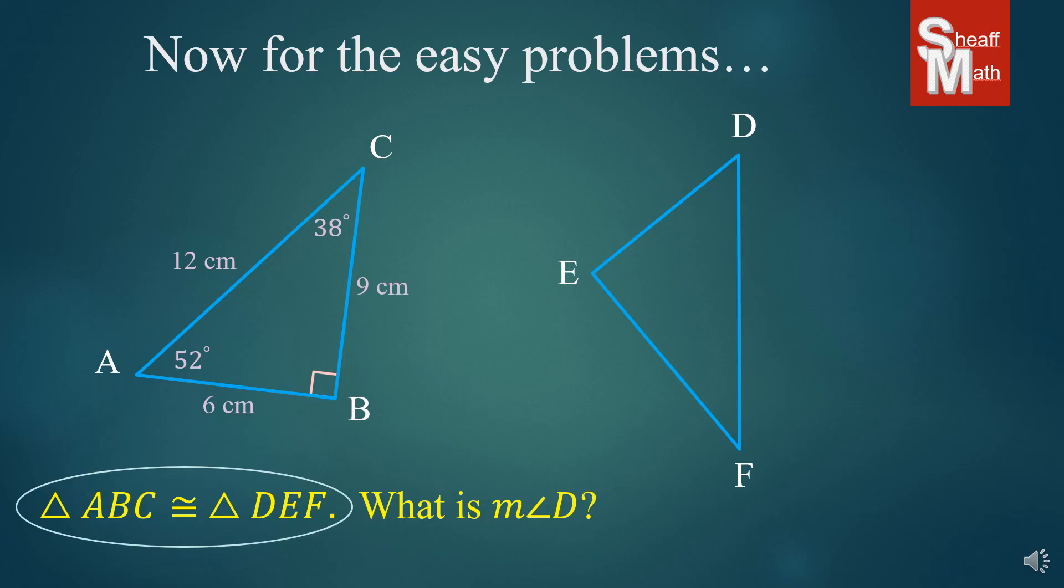Because ABC corresponds to DEF. That means A matches D, B matches E, and C matches F. So, if we're trying to find the measure of angle D, let's look at what D matches to, or corresponds to. It corresponds to A. And so, there it is. All you have to do is look at that congruency statement, and you'll get your final answer. Pretty easy, huh?